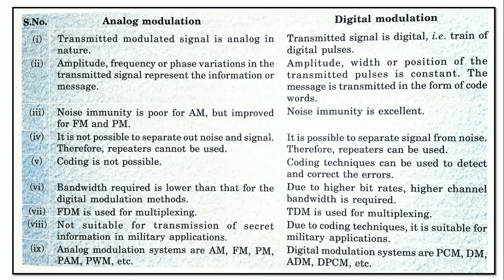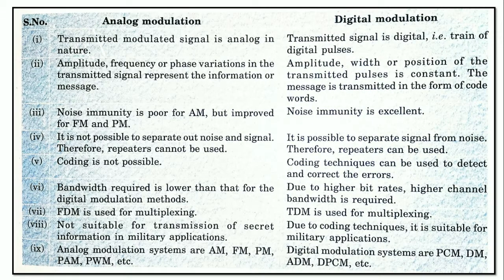In analog modulation, variation in amplitude, frequency, or phase will be according to the message signal. In digital modulation, the amplitude, width, or position of the transmitted pulses is constant, and the message is transmitted in the form of code words.